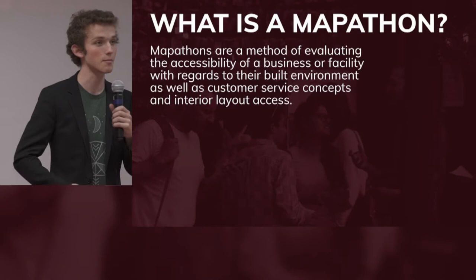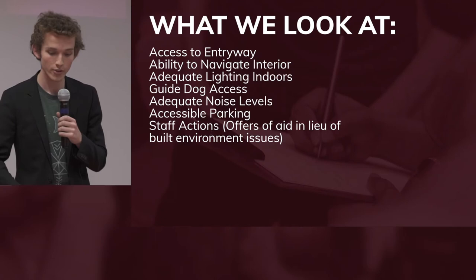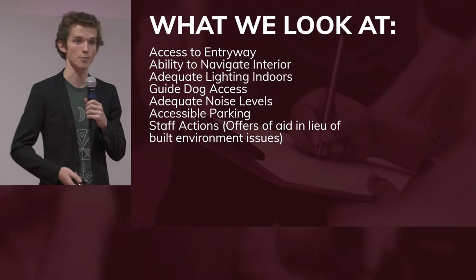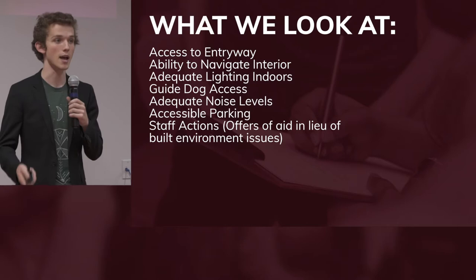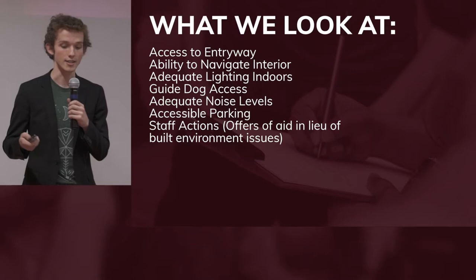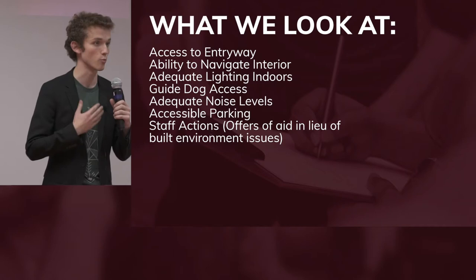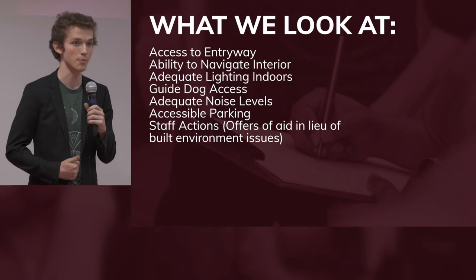This is in order to help promote businesses that are accessible and that have accessible practices. Here are some of the things we look at: the built environment — how accessible is the entryway, do they have a ramp, is the doorway wide enough, can you navigate the interior? Is there adequate lighting for people with visual impairments to read menus and signage? Is there guide dog access, adequate noise levels, accessible parking? Do staff go out of their way to make up for deficiencies? For example, one of the biggest things we come across is business owners willing to go above and beyond to help a wheelchair user up a one-step entryway — that business could still be considered accessible even though it may not look like it from the outside.